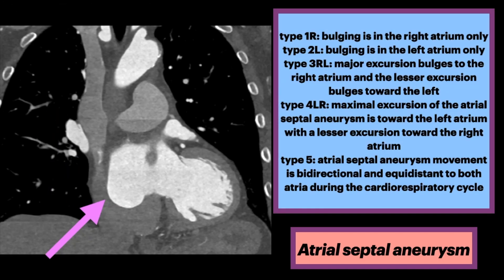This finding is encountered in approximately 1% of the pediatric population. Several classification systems have been proposed, including the following, which categorizes based on the involvement of the right and left atria.